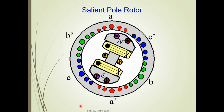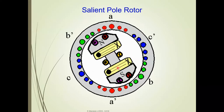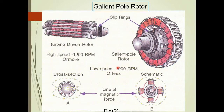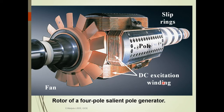Here you can observe the salient pole rotor — this is the stator and this is the rotating rotor. There is a slip ring, which is used for low speed. This is a DC excitation winding, which will be excited separately.